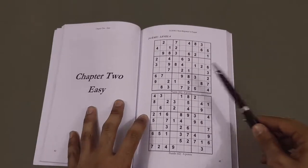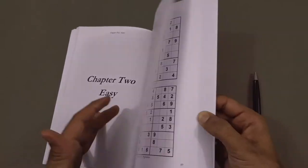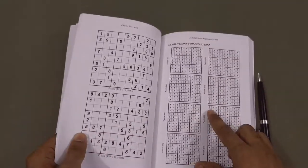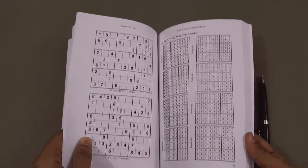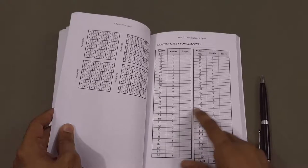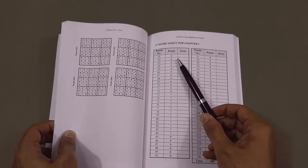So you go on trying to solve this puzzle, and then you go to the solutions and check your answer. And then you can write down your score for this particular puzzle.